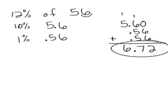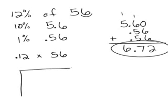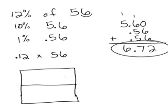So the answer is 6.72. The other way to do this is you can always turn 12% into a decimal by moving the decimal over two places, and it's just .12. Of means multiplication. So you could just go ahead and do the multiplication. And I'm going to go ahead and do it with lattice.